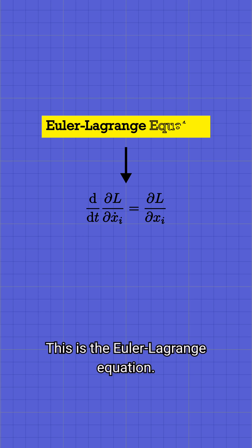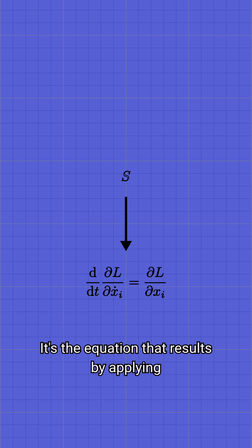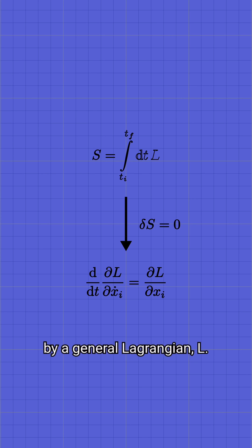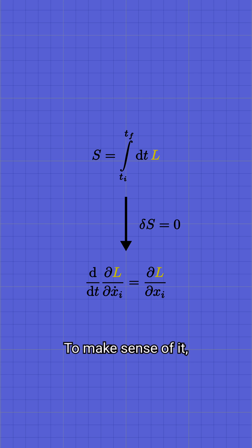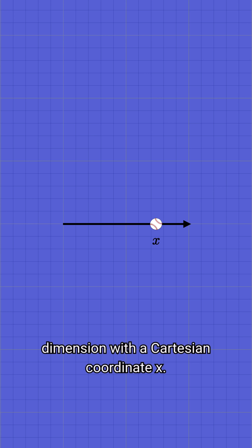This is the Euler-Lagrange equation. It's the equation that results by applying the principle of least action to a system described by a general Lagrangian, L. To make sense of it, consider the simplest case of a particle moving in one dimension with a Cartesian coordinate x.